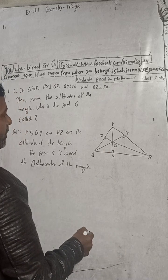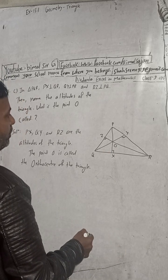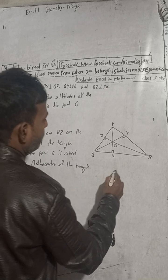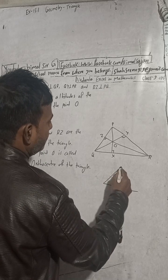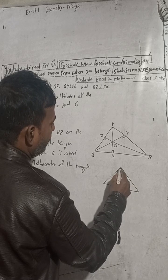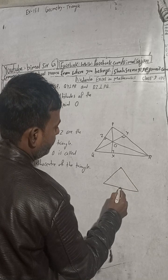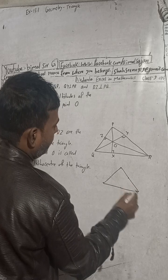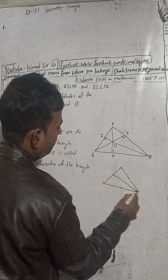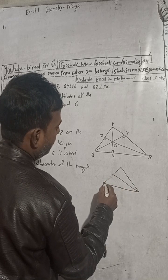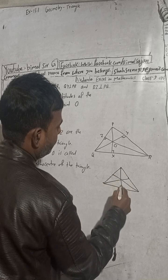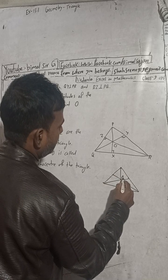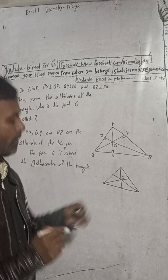Also, the centroid — the centroid of a triangle is where the lines from each vertex to the midpoint of the opposite side meet. That meeting point is called the centroid of the triangle.